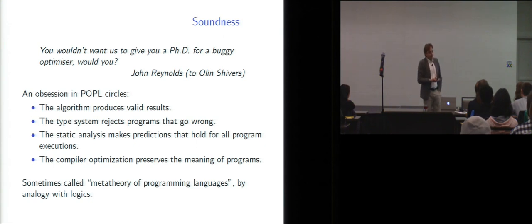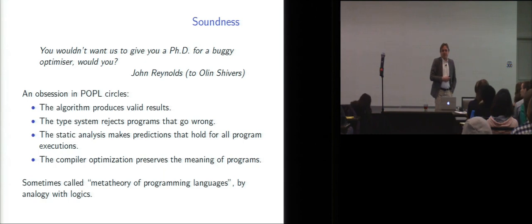If you have a type system, maybe it doesn't accept that many programs. But at the very least, it should reject programs that go wrong at runtime. If you have a static analyzer, it must make predictions that actually hold for all program executions. If it says the analyzed program terminates, then the analyzed program has better terminate in all executions. Or if you're doing a compiler optimization, maybe it's not improving performance that much. But at the very least, it should preserve the meaning of programs and not change the meaning of your program, not miscompile. And that's actually this great quote of John Reynolds, who has a PhD committee of Alain Sheevers. You wouldn't want us to give you a PhD for a buggy optimizer, would you?